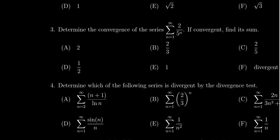In this video, we're going to provide the solution for question 3 on the final exam for Math 1220. In this question, we're asked to determine the convergence of the series where n ranges from 1 to infinity and we add together the sequence 2 over 5 to the n.